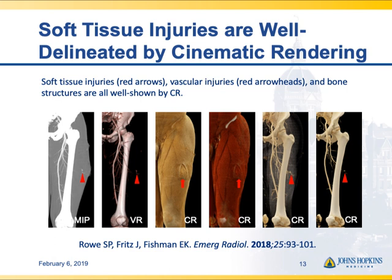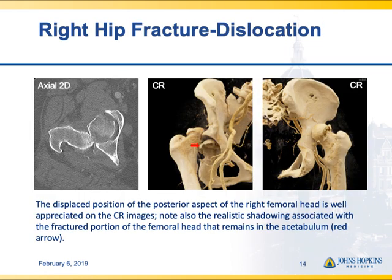Here's an example of a soft tissue injury. We practice in Baltimore where there are lots of penetrating traumas such as stab wounds and gunshot wounds. Here's a patient who was stabbed in the thigh. The MIP image on the far left shows a subtle vascular injury also seen on the volume rendered image, but with cinematic rendering you get nice soft tissue details showing the laceration through the muscle, without losing the visualization of the small vascular injury.